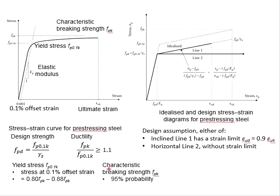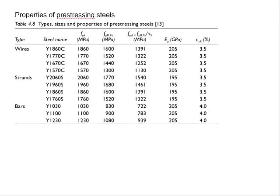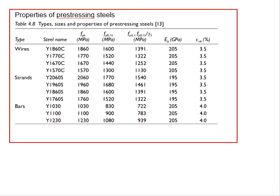And the term characteristic, the K in the symbol of Fpk, it represents the 95% probability of the samples having the strength higher than that.